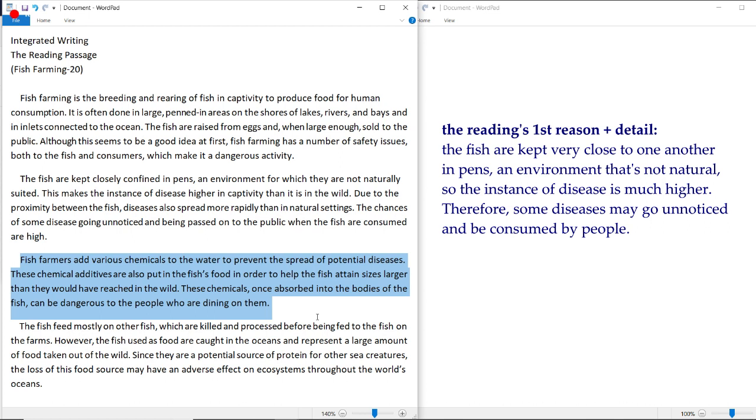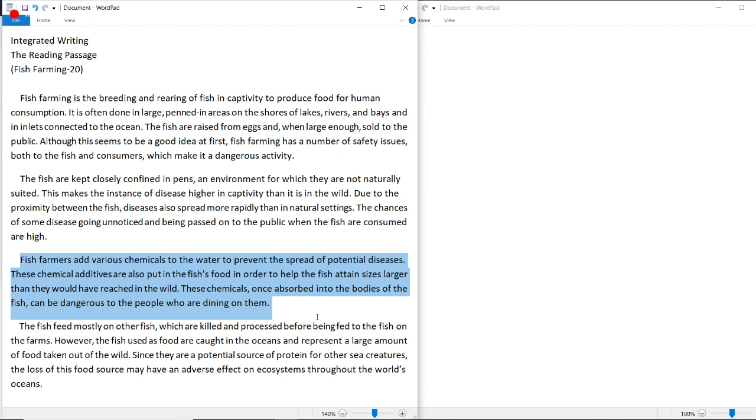All right, now let's move on to the second body. Fish farmers add various chemicals to the water to prevent the spread of potential diseases. Great! These chemical additives are also put in the fish's food in order to help the fish attain sizes larger than they would have reached in the wild. So there's two reasons fish farmers add various chemicals: to not only prevent the spread of diseases but also to help the fish become larger than they naturally can. And the reading passage wrote two separate sentences for that idea for no reason. Notice it and change it into one—combine it into one sentence.